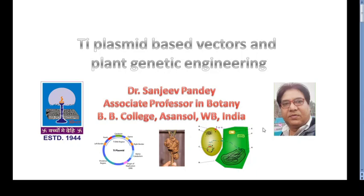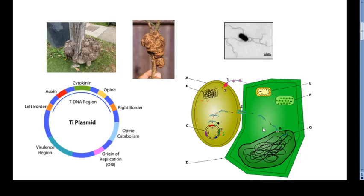In the first lecture we talked about plasmid vectors, then we shifted to phage vectors and their hybrid versions like cosmids and phagemids, and we also talked about high capacity cloning vectors like YAC and BAC. This Ti plasmid vector required a separate treatment, so I made a separate lecture for that.